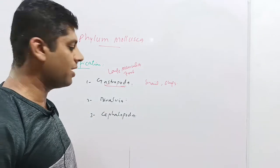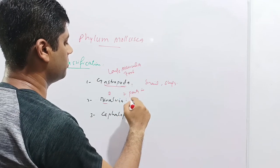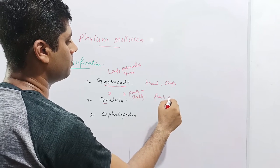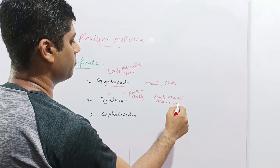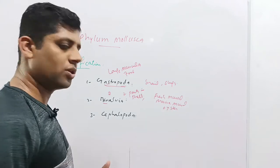The class bivalvia. Bi means two, so these animals have two parts in their shells. For example, freshwater mussel, marine mussel or oyster. These are the animals which belong to the class bivalvia.